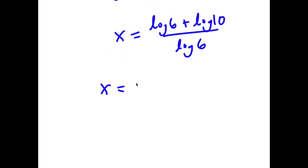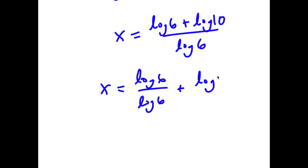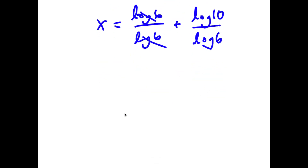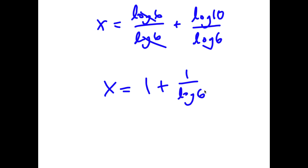This is the same thing as log 6 over log 6 plus log 10 over log 6. Log 6 and log 6 cancel out. So now I have x is equal to 1 plus log 10 over log 6, and log 10 is equal to 1, so it's 1 plus 1 over log 6.